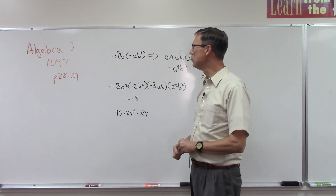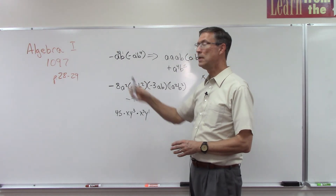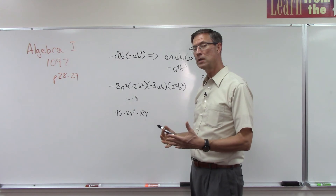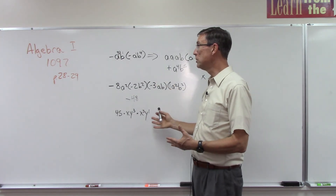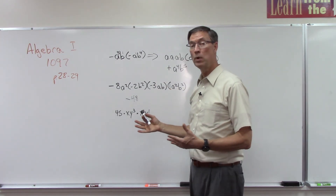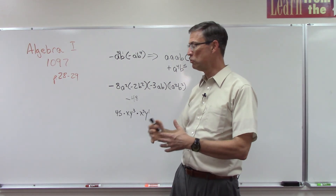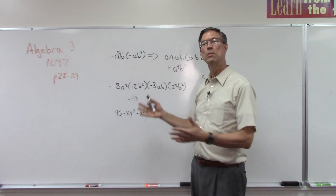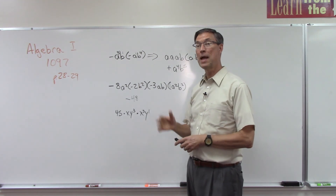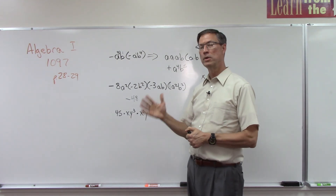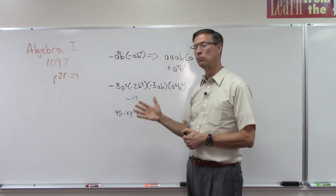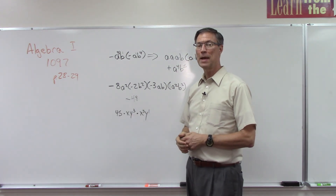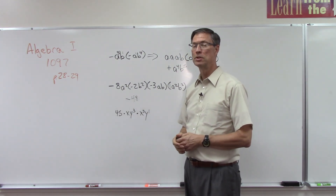Hopefully with those three examples and studying page 28 and the other examples there, you'll feel more confident doing all of page 29. I encourage you: after every page, stop and score. Don't try to work all the way to a checkup and then score — score one page at a time, maybe even half a page, just to make sure you're understanding. Then right away do your corrections. We'll be back to look at division in just a minute.